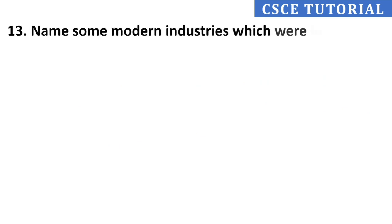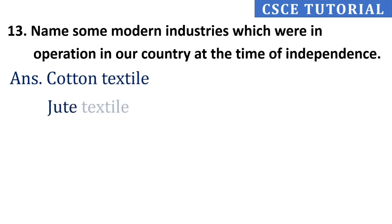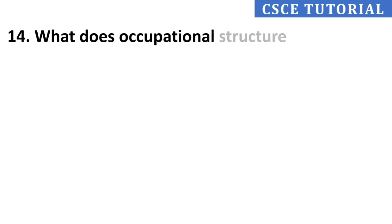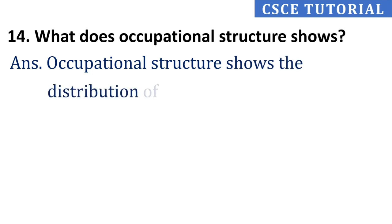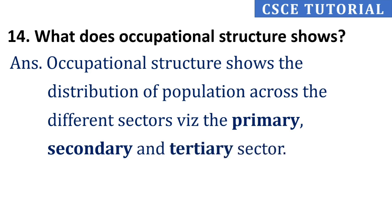Thirteenth question: Name some modern industries which were in operation in our country at the time of independence. Fourteenth question: What does occupational structure show? Its answer is, occupational structure shows the distribution of population across the different sectors — the primary, secondary, and tertiary sectors.